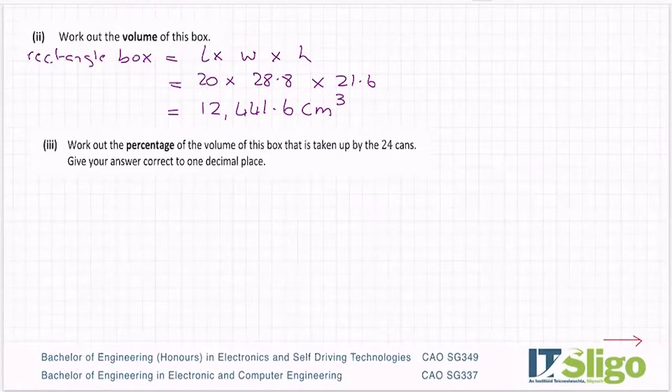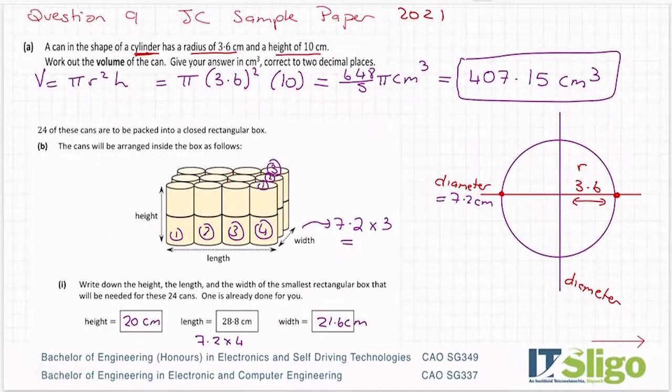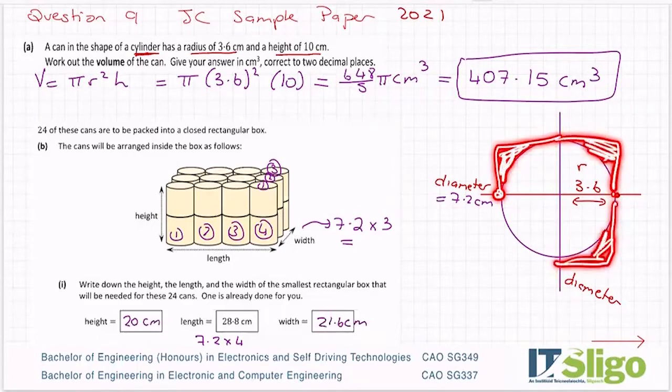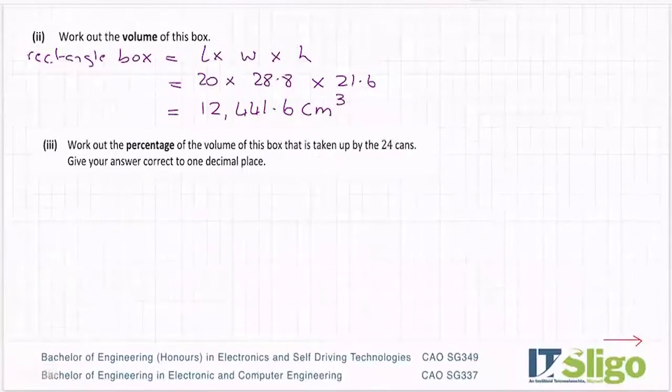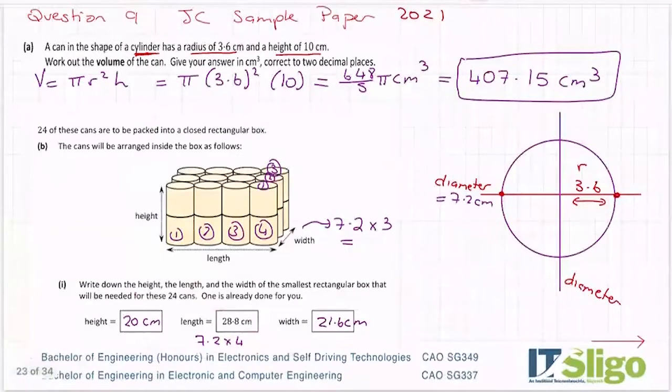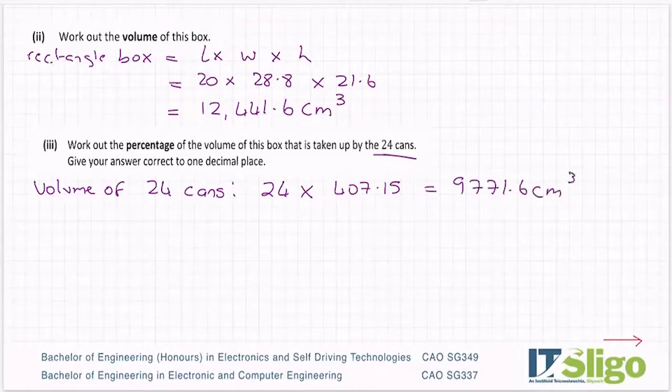Work out the percentage of the volume of this box that is taken up by the 24 cans. Hard enough old question there to get your head around. I suppose you have to know that cans, circle cans, don't fit fully into the box. There are gaps between them. So although they touch at the diameter, you can see there's all this spare area around the can where nothing else will fit in. It's fresh air. So how do I do that? Well, I have the volume of the box. I have volume of one can. So I need to find out volume of the 24 cans. So that's 24 multiplied by 407.15, which is 9,771.6 cm³.